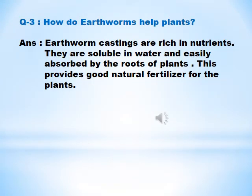Question number three. How do earthworms help plants? Answer is: earthworm castings are rich in nutrients. They are soluble in water and easily absorbed by the roots of plants. This provides good natural fertilizer for the plants.